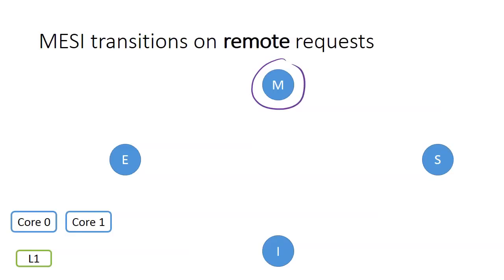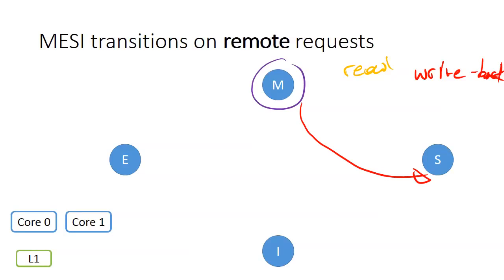Finally, if the cache line is in the modified state and core 1 requests a read, the cache line transitions to the shared state: core 0 sends the new data to core 1, resulting in multiple copies, and coherence protocols also perform a write-back to main memory to establish a clean shared copy there. If core 1 is trying to write on the data that are modified in core 0's cache, we have a transition to the invalid state. This ends the lesson on the MESI cache coherence protocol.